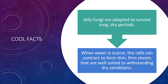Some cool facts about jelly fungi are that there are different variations of them, and also that jelly fungi are adapted to survive long dry periods. The fruiting bodies are made up of hyphae with flexible cell walls that allow the cells to expand greatly when water is available. When water is scarce, the cells can contract to form thin, firm sheets that are well suited to withstanding dry conditions.